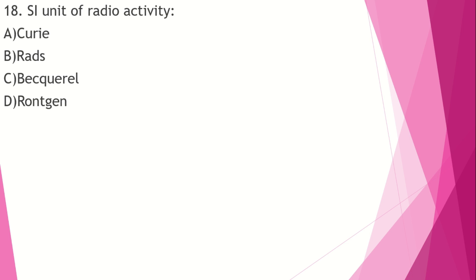The SI unit of radioactivity is the becquerel — one radioactive decay per second. The curie and roentgen are other units. In medical terms, the unit of radioactive exposure to living tissues is the sievert. If you receive 80 millisieverts, that is significant exposure in a radioactive area.